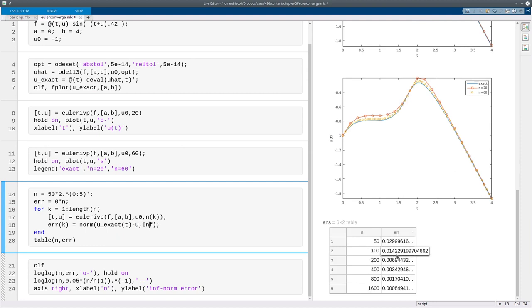And as we double n each time, you can see we are practically cutting the error in half each time. That's what you get with first order convergence.